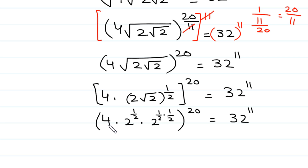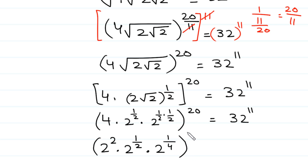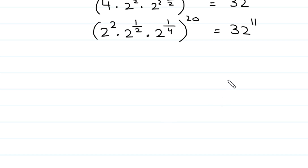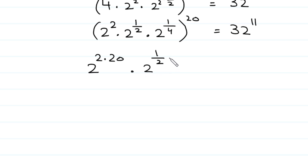Next, 4 can be written as 2 to the power 2, giving us 2 to the power 2 times 2 to the power 1 over 2 times 2 to the power 1 over 4, to the whole power 20, equals 32 to the power 11. According to the rule of exponents, this power 20 is multiplied by the powers inside the brackets, giving 2 to the power 2 times 20, times 2 to the power 1 over 2 times 20, times 2 to the power 1 over 4 times 20, equals 32 to the power 11.